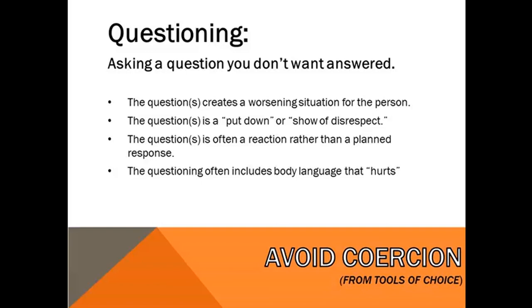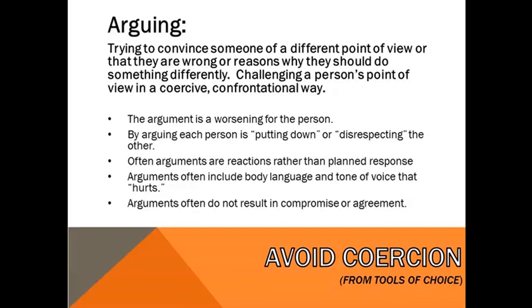Arguing — the back and forth, trying to convince someone of your point of view or challenging theirs in a confrontational way — really ramps things up. People going back and forth just trying to convince each other can quickly get toward lecture and logic. It's bad for your relationship and nobody's going to convince anybody of anything. Sarcasm and teasing — saying the opposite of what you mean, or pointing something out at someone's expense. These are also complex social skills that are bad for your relationship, and someone is always the butt of the joke.